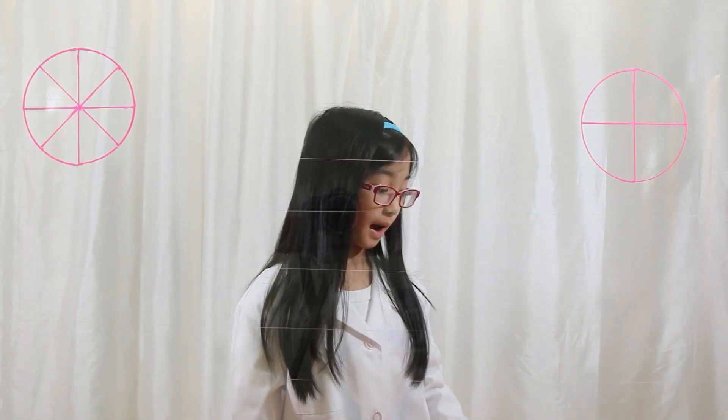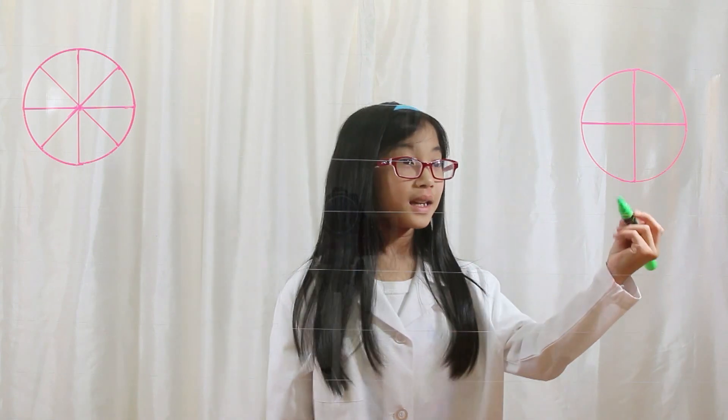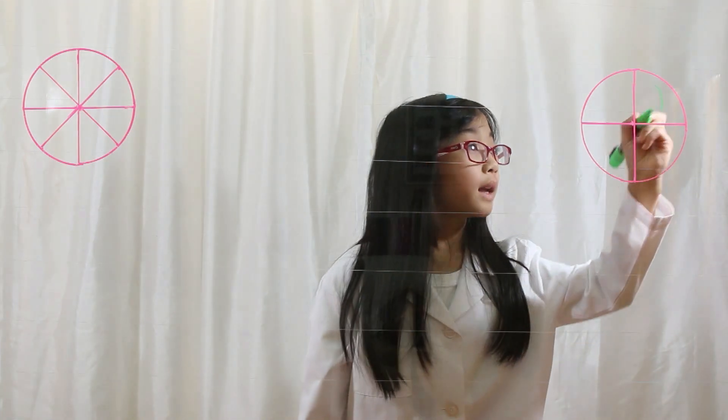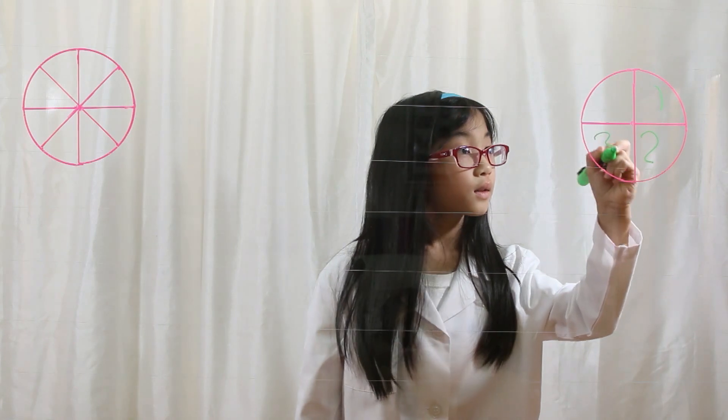Let's look at this pie. How many pieces are there? One, two, three, four pieces.